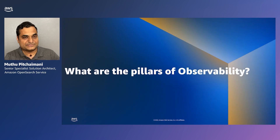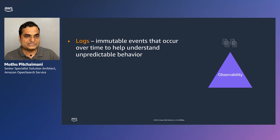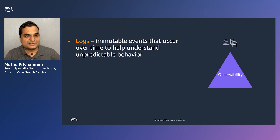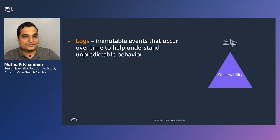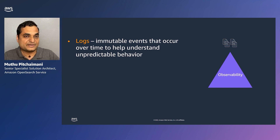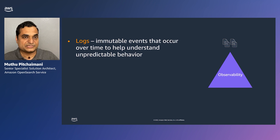What are the pillars of observability? For a system to become observable, you need different kinds of data collected from it. The first and foremost is logs. Logs are immutable events that occur over time and help you get insight on what is going on within a system. They emanate from different parts like your applications, your services, your infrastructure, and so on.